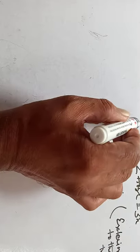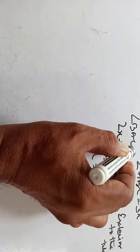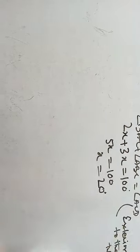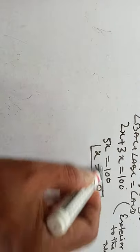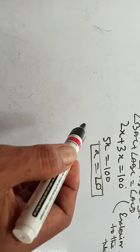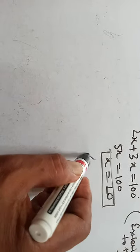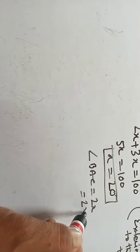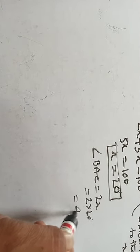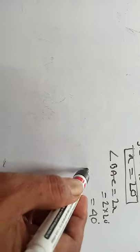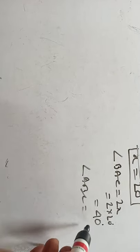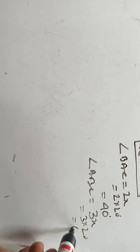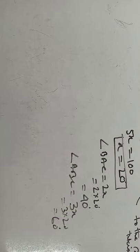That means angle BAC plus angle ABC equals angle ACD. That means x equals 20 degrees. Angle BAC is equal to 2x, that means 2 into 20 degrees, that means 40 degrees. And angle ABC equals 3x, that is 3 into 20 degrees, that means 60 degrees.